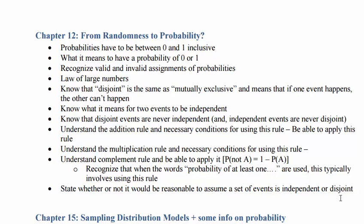A probability of one is something that always occurs — as they say, death and taxes, because those two things always happen. A probability of one means it always happens every single time. When we look at valid and invalid assignments of probabilities, we can't have negative probabilities and we can't have probabilities over one.